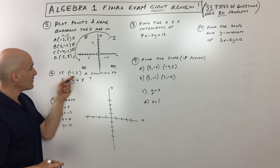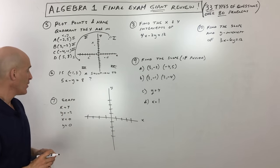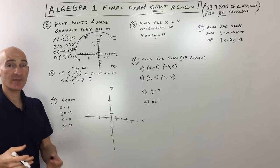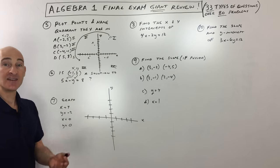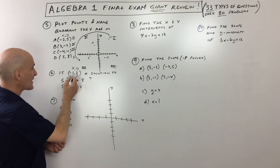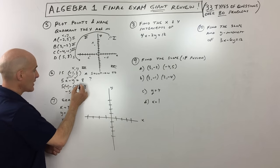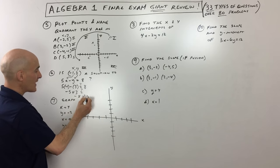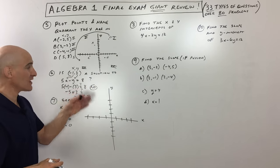Number 6 asks: is point negative 1, 3 a solution to the equation 5x minus y equals 8? I would put negative 1 in for x and 3 in for y, then simplify. 5 times negative 1 is negative 5, minus 3 is negative 8, which does not equal positive 8. So no, this is not a solution — it's not a point on the line.